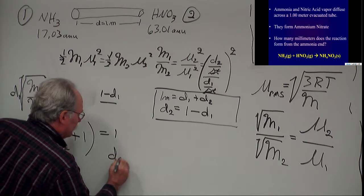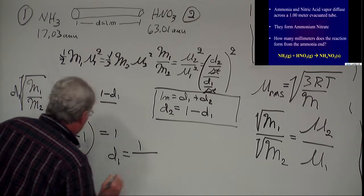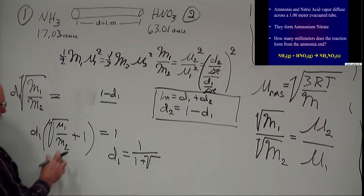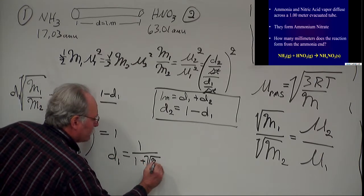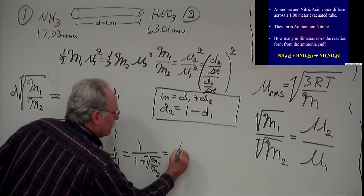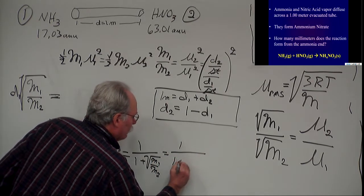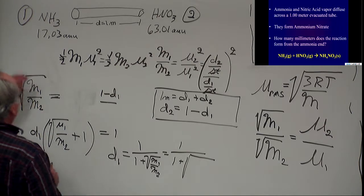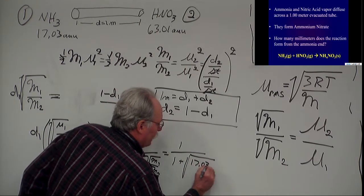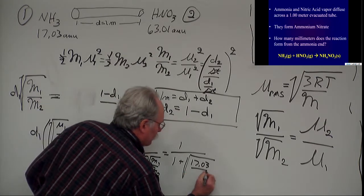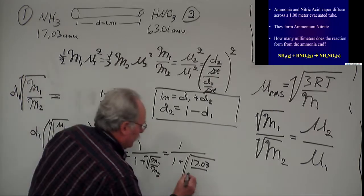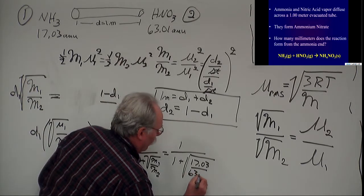Now that I've got my D1 times the factor, I can factor it out and I got D1 is equal to 1 over. Now I'm not sure why, but I always like to write these as 1 plus the square root, not the square root plus 1. And this is the molar mass of the first object over the molar mass of the second, which is now equal to 1 over 1 plus the square root. The first object was 17.03, and I could write AMUs in here. I probably should, but I'm running out of room, so I'm not going to. Divided by 63.01.